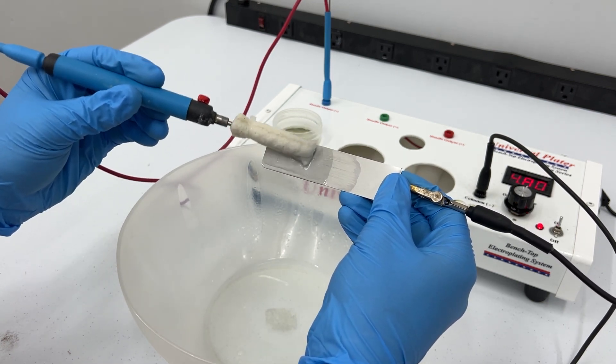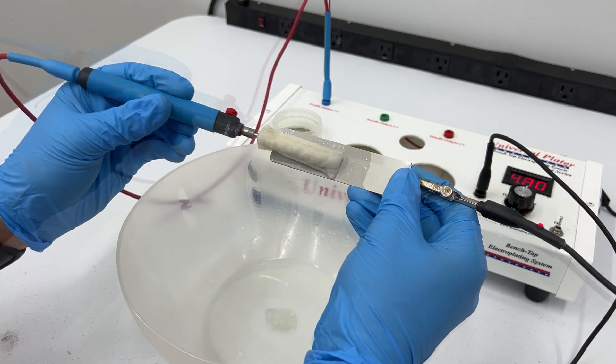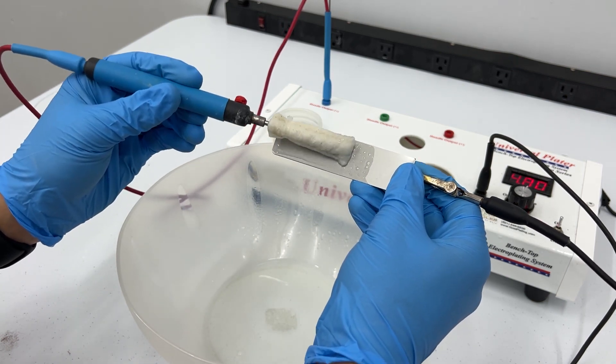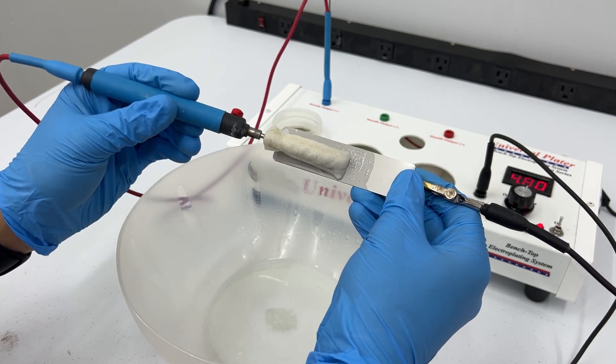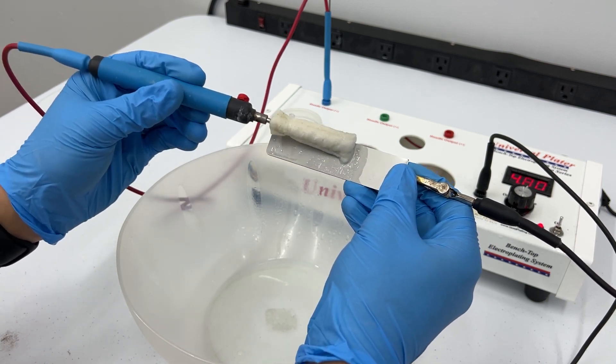Make sure you electro clean for long enough because your part can easily dry out if you don't. A good technique that I like to use when plating is going past the middle point where I would want to plate, so that when I plate with other metals I have room to transition my plating from one point to another.